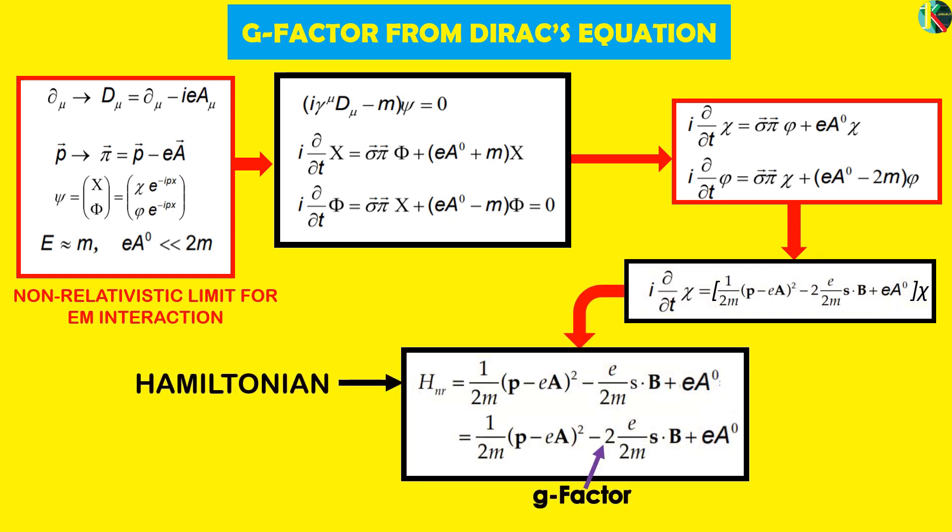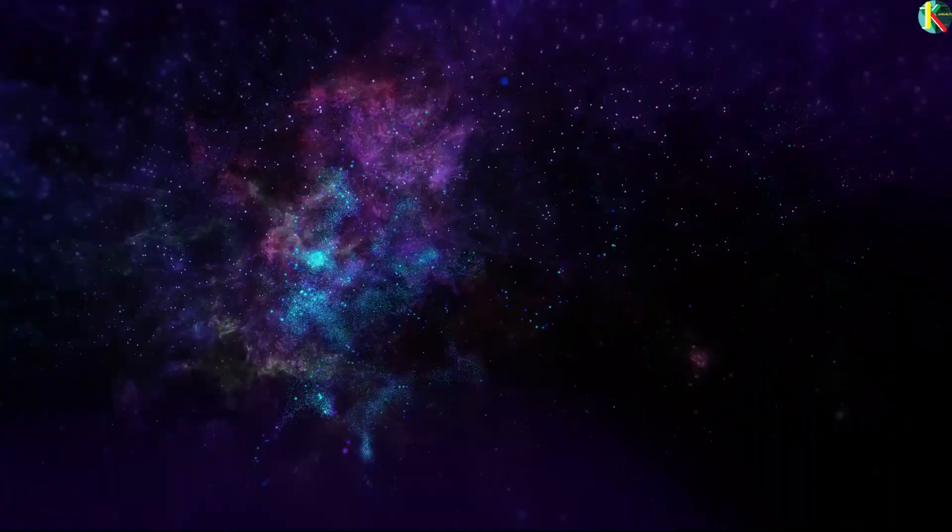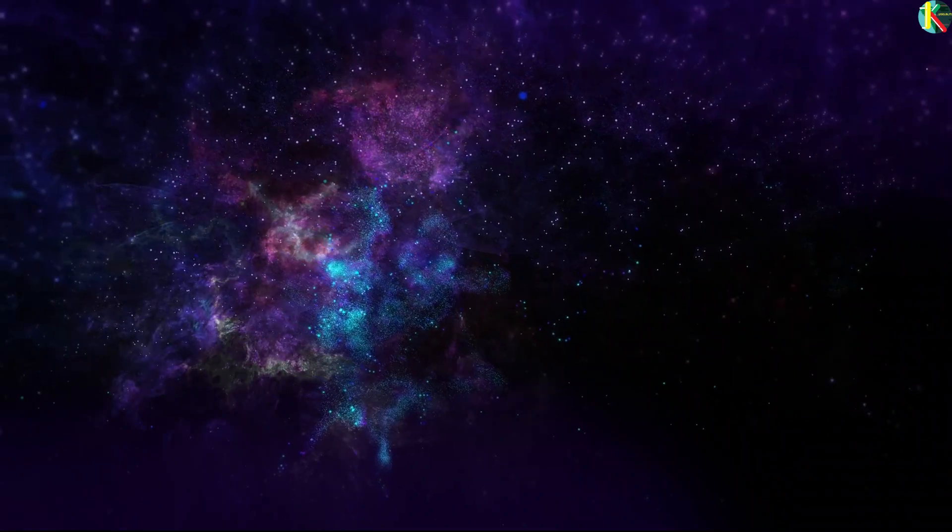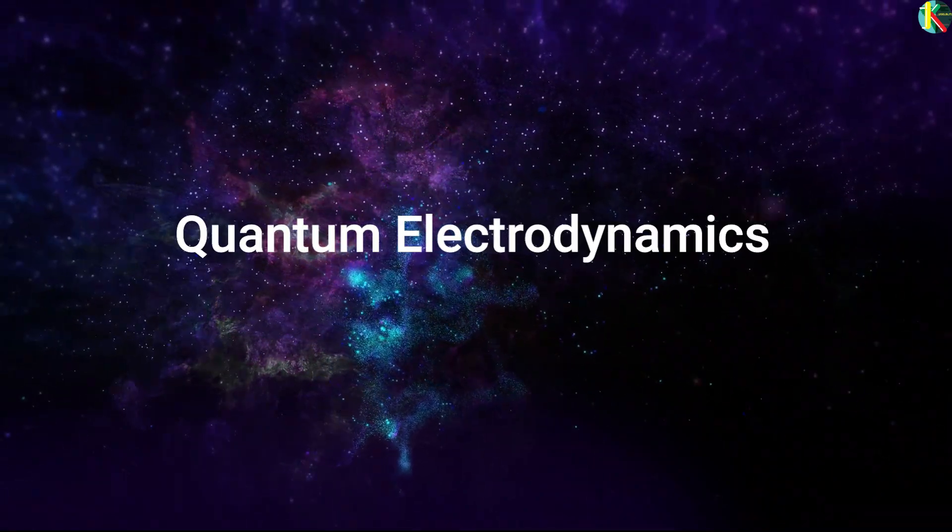This correction term takes account of the interaction of the electron's intrinsic magnetic moment with the magnetic field and gives the correct energy. But in reality, value of g is slightly different from 2. To understand this phenomena, quantum electrodynamics might help us.